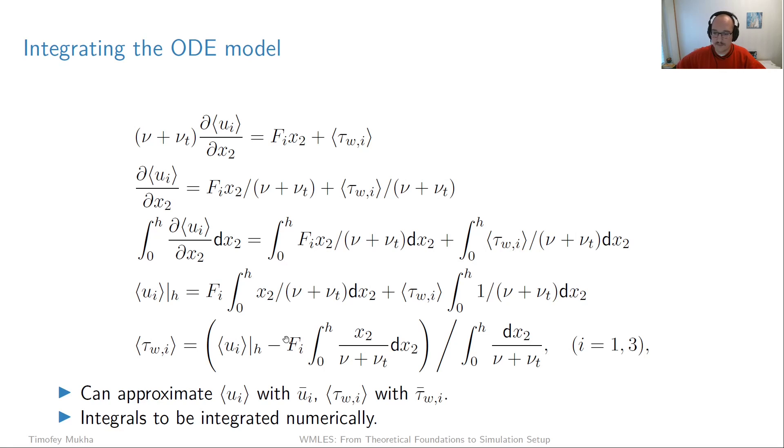We put the integration sign from 0 to h for all these terms. The derivative with respect to x2 integrated gives us ui at h, which we sample from the LES, minus the evaluation of velocity at 0, which is zero due to the no-slip condition. On the right-hand side, we cannot really go any further because we don't know what nu t is—it depends on y. We have these two integrals left. However, we can now explicitly express the wall shear stress in terms of the other terms.